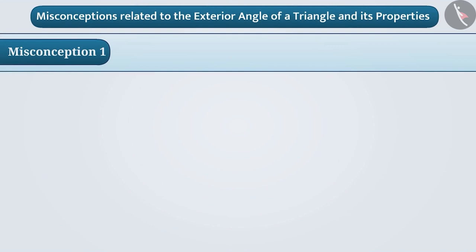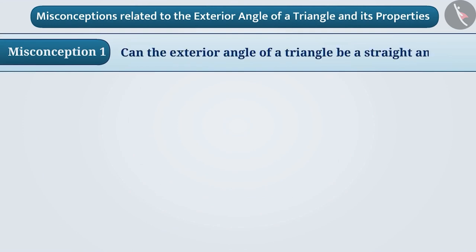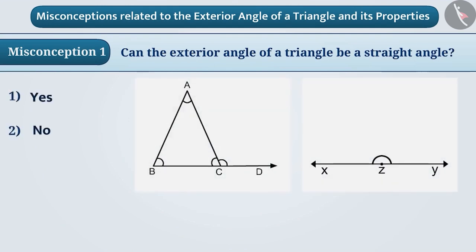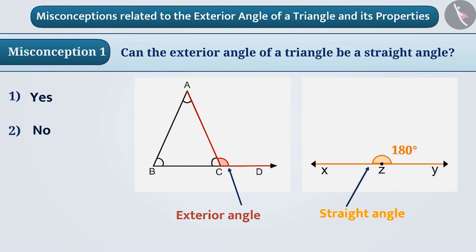Misconception 1: Can the exterior angle of a triangle be a straight angle? Some students get the wrong idea that the exterior angle of a triangle can also be a straight angle — that is, an angle of 180 degrees. But this is a misunderstanding, because it is not possible to make a triangle where the exterior angle measures 180 degrees.